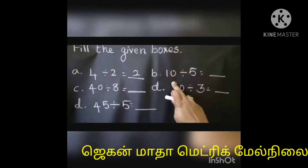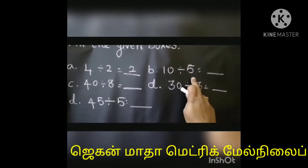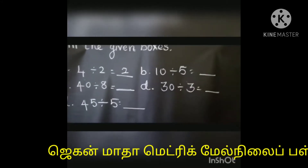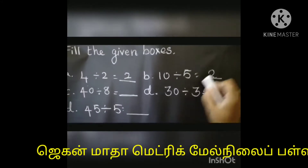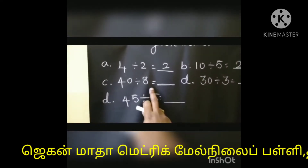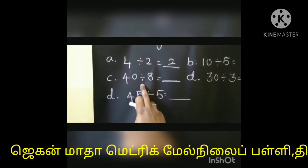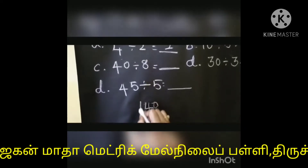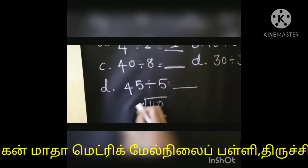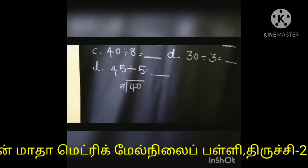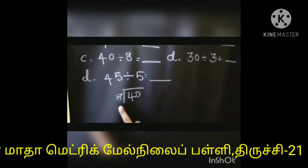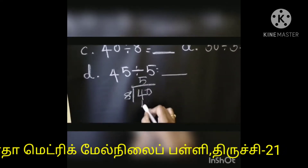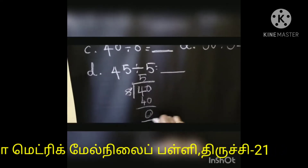Next one: 10 divided by 5. The same thing — you are using the 5 table. 5 1 is 5, 5 2's are 10. So 5 2's are 10. Next one: 40 divided by 8. This is a 2-digit number divided by a single digit number. Let's check in the 8 table. We know 8 5's are 40, so 8 5's are 40. The answer is 5.